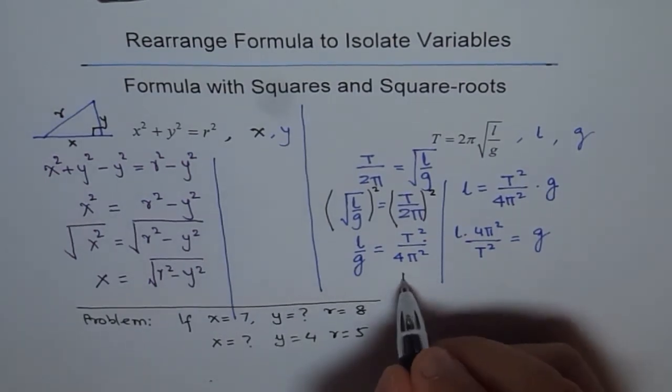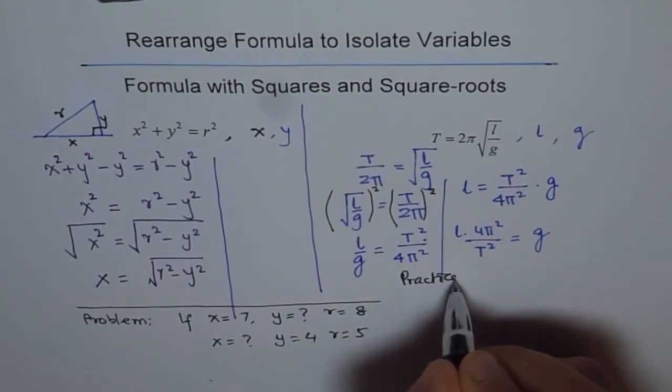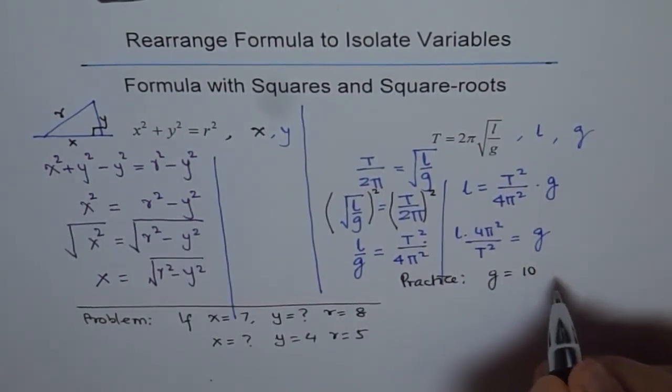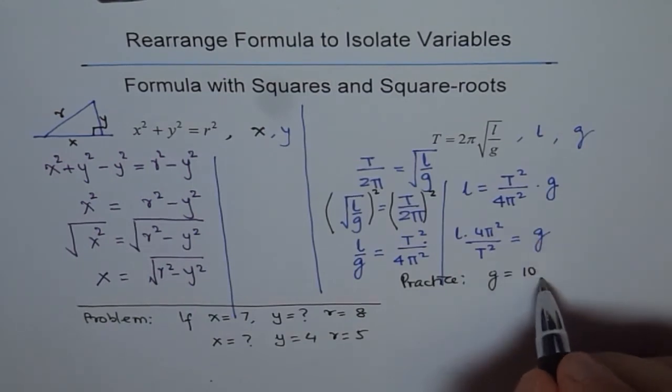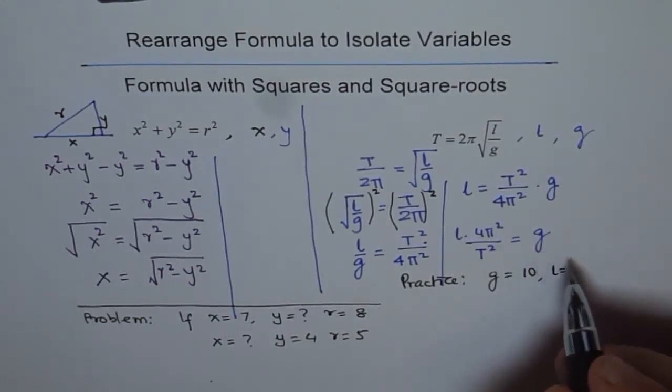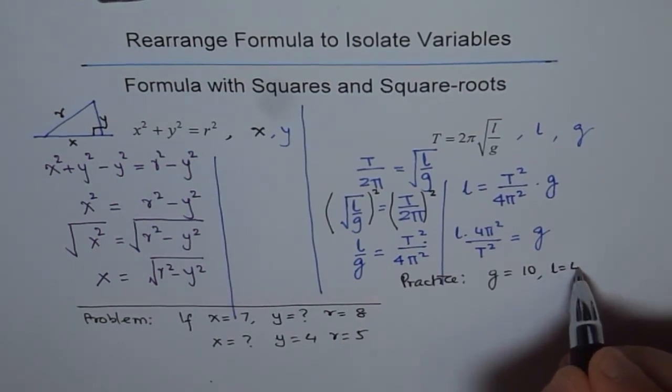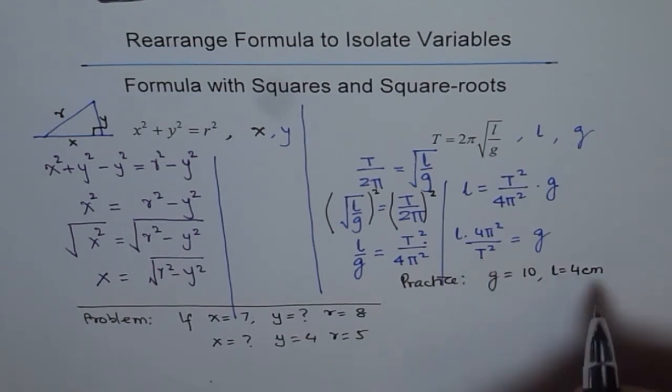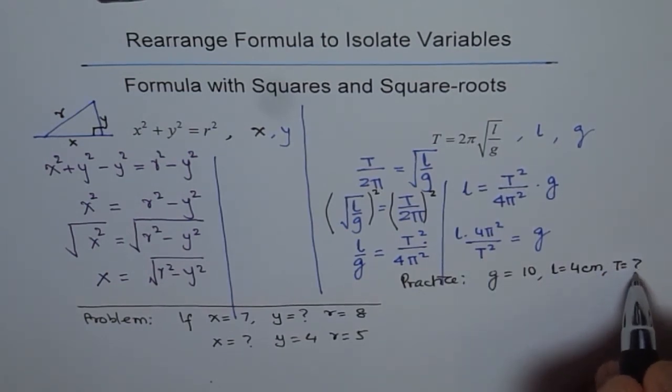So, here you can do a practice problem. So, practice problem for you here is, let us say g equals to 10. Take a value of g as 10 and let it be, for easy calculations, let's say it is 4, 4 centimeters. Then, find what t is.